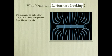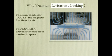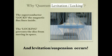What the superconductor actually does is lock these strands — called fluxons — in place. By locking the fluxons, it locks itself in place, because any movement of the superconductor would change their configuration. This is quantum locking.